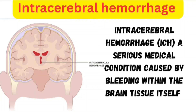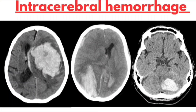Intracerebral hemorrhage is bleeding inside the brain tissue itself, often caused by high blood pressure, trauma or a burst blood vessel. This bleeding builds up quickly, damaging brain cells and raising pressure inside the skull. Symptoms can hit suddenly: headache, weakness, confusion or loss of consciousness. On CT scan, bright white areas represent acute bleeding within the brain tissue. Early detection and management are crucial to prevent serious brain damage or death.